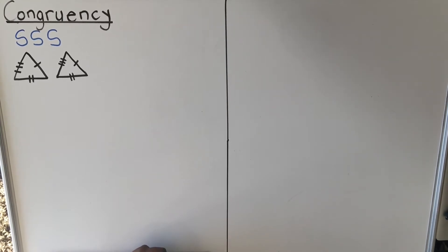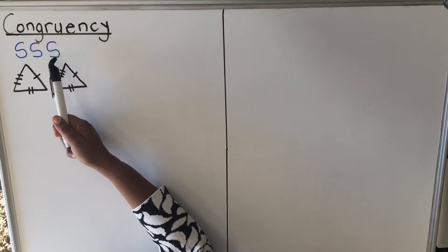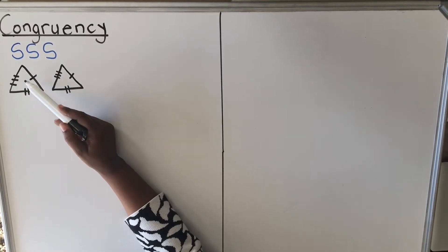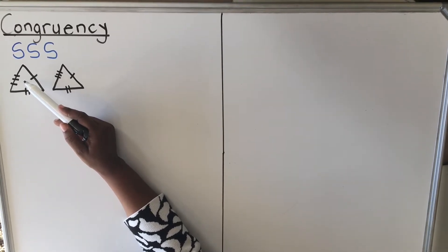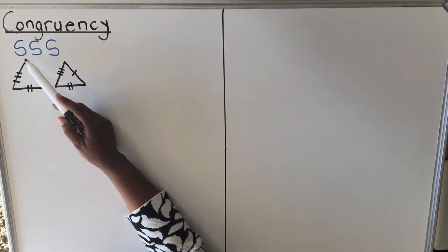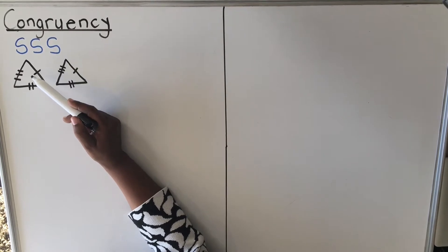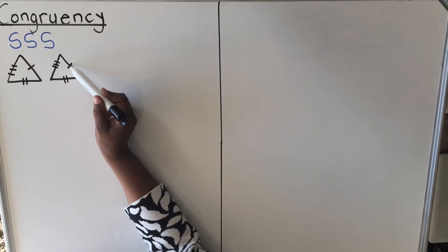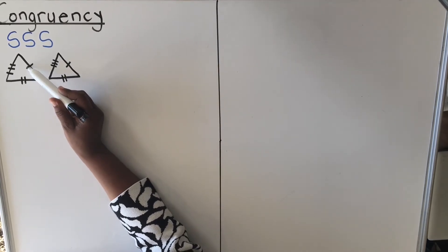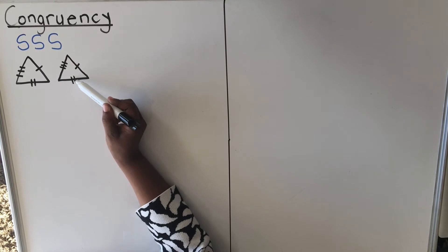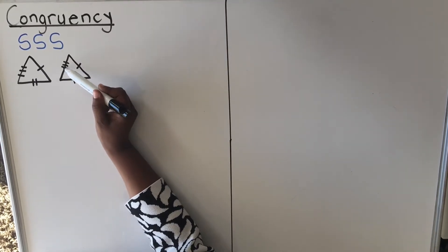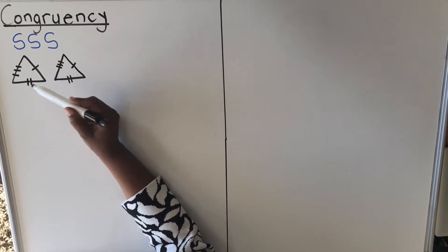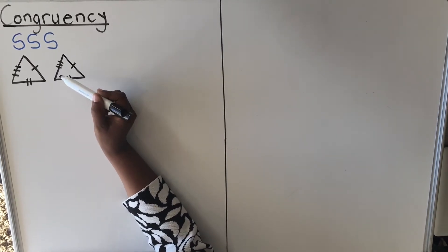The first condition is Side-Side-Side. A triangle is made up of three sides, so when we talk about congruent triangles we have two triangles here. If the condition is Side-Side-Side, the sides are equal. In maths, we show equal sides with small tick marks. One tick means this side equals that side. All three sides in one triangle equal the corresponding three sides in the other triangle, so the reason for congruence is Side-Side-Side.